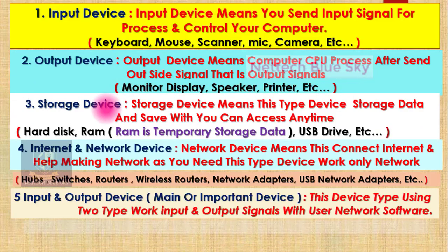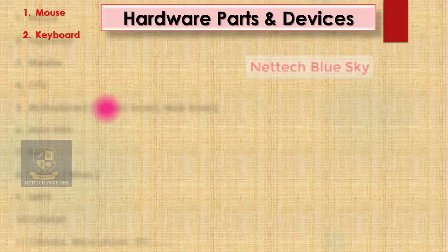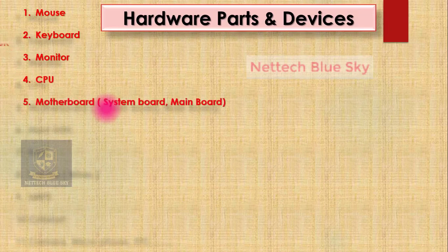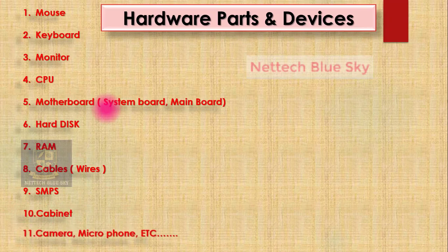How these home types work — this is really important for you to watch. My computer hardware videos cover important parts one by one: mouse, keyboard, monitor, CPU, motherboard, hard disk, RAM, cables, SMPS, cabinet, camera, and microphone.